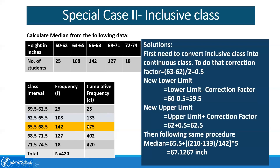In our particular situation, the value just greater than 210 is 275, so this is our median class. Once we identify the median class, we apply the formula. Median equals L1, which is 65.5, plus n by 2 — that is 210 — minus fm minus 1, the cumulative frequency of the preceding class, which is 133, divided by the frequency of the median class, which is 142, entire thing multiplied by the common width, which is 5. Calculating this, we get 67.1267 inches as the median height.